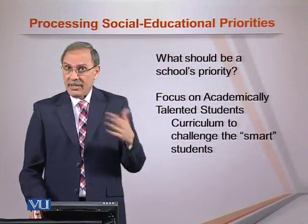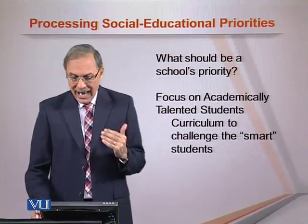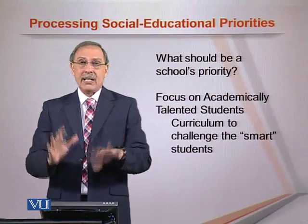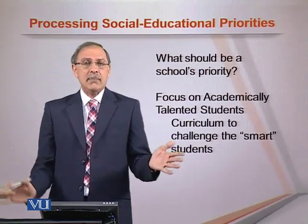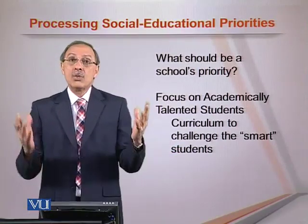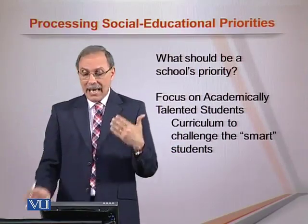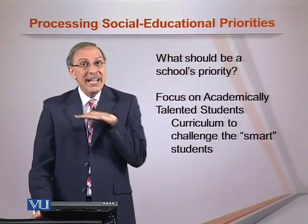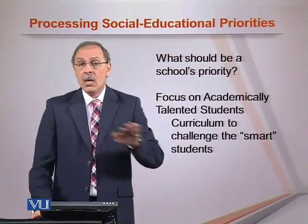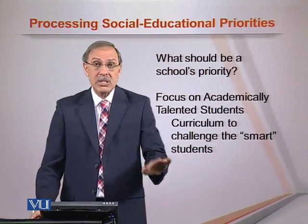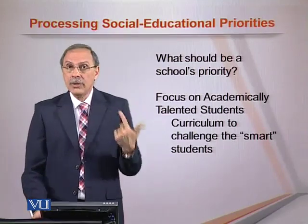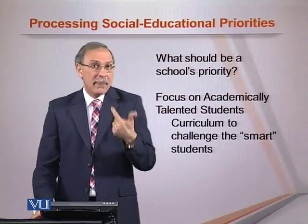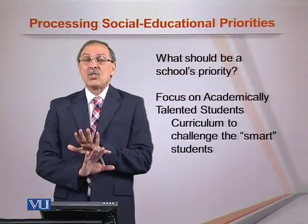What should be a school's priority? One approach is to focus on academically talented students. That's what some schools do — they only focus on the bright kids. With an admission test requiring 80% or more, the intake is already academically talented students. If the slow or not-so-bright ones are weeded out through the admission test, then the curriculum must challenge the smart students — reading a text, copying from the board, answering questions is not going to work.